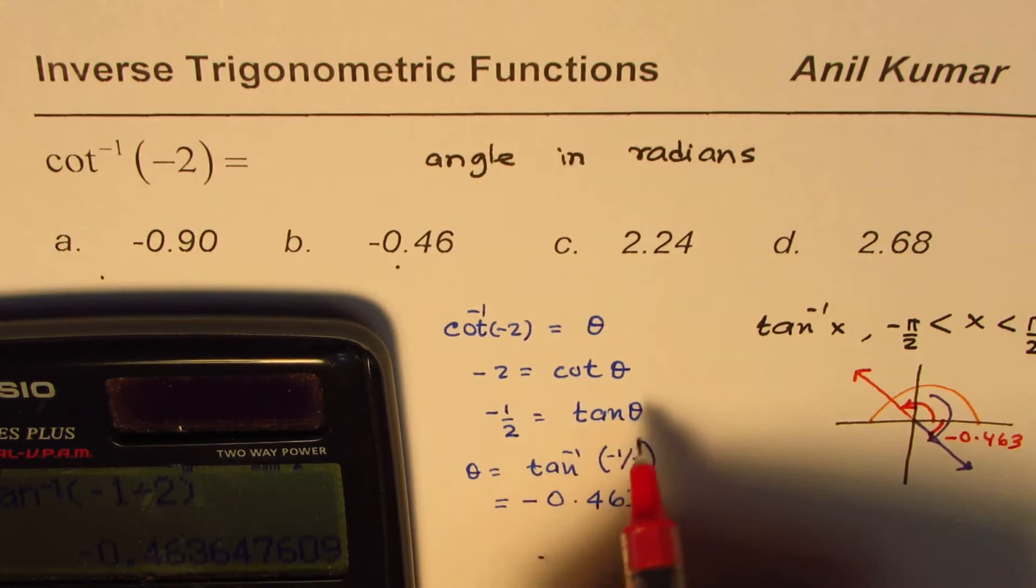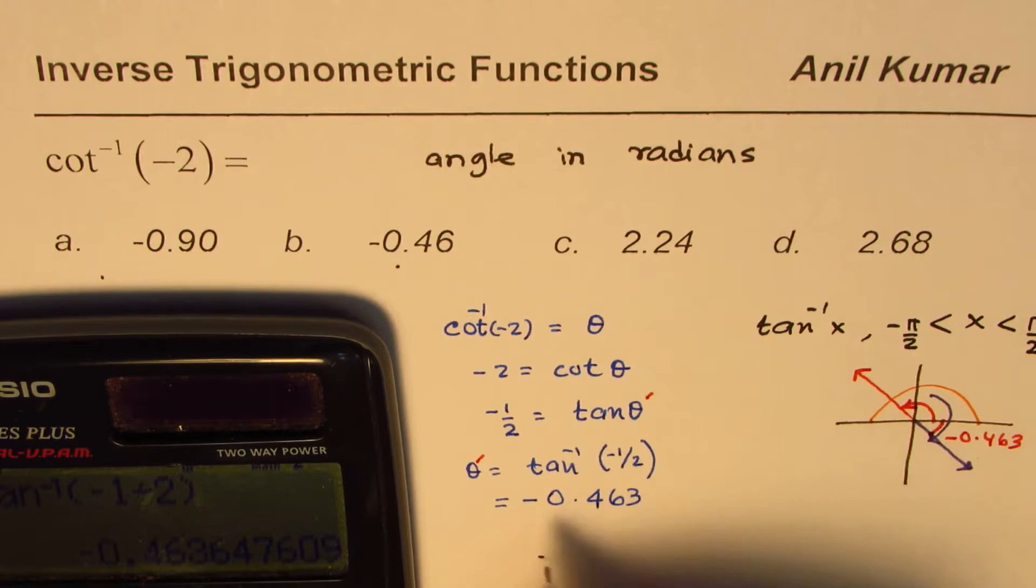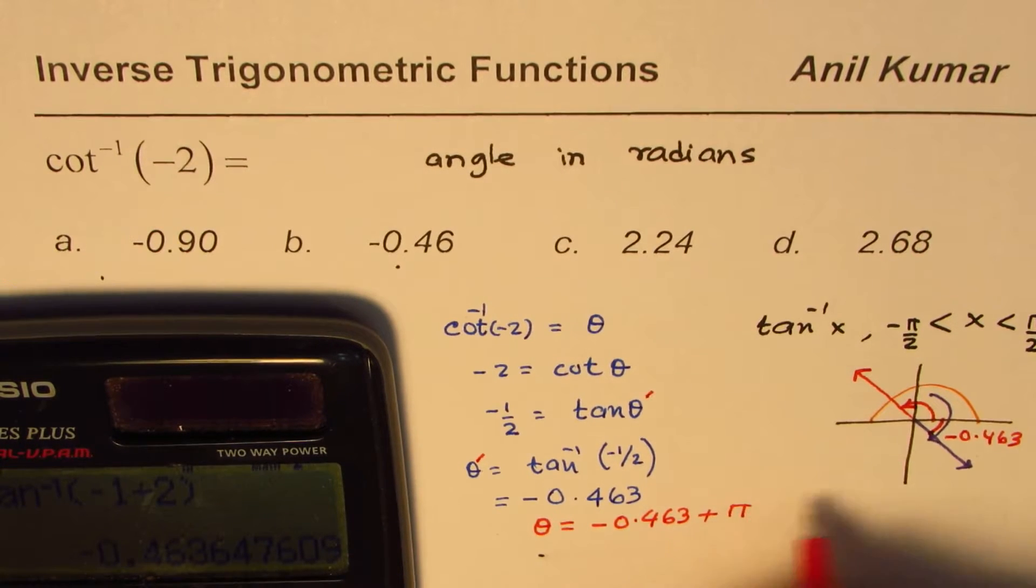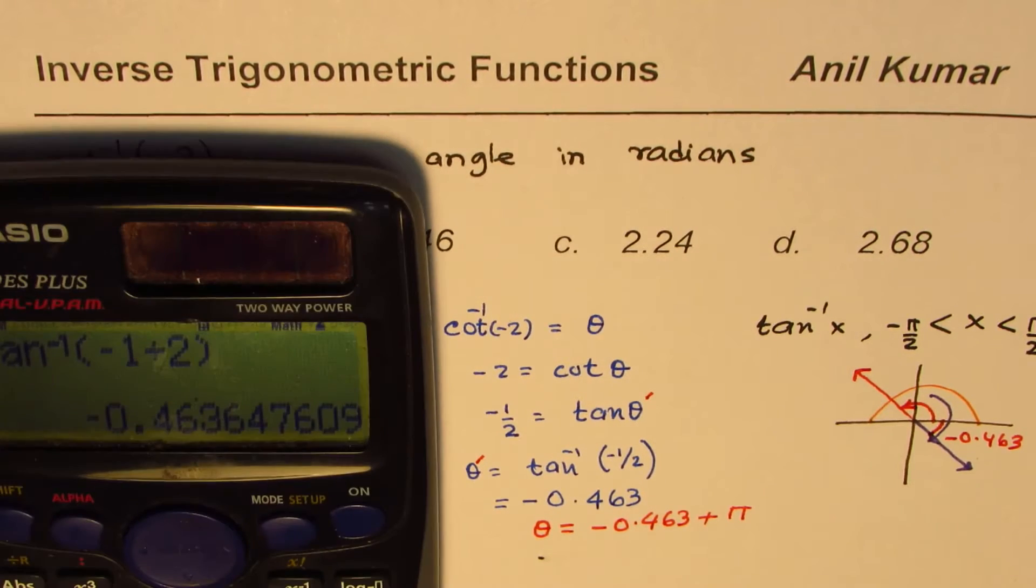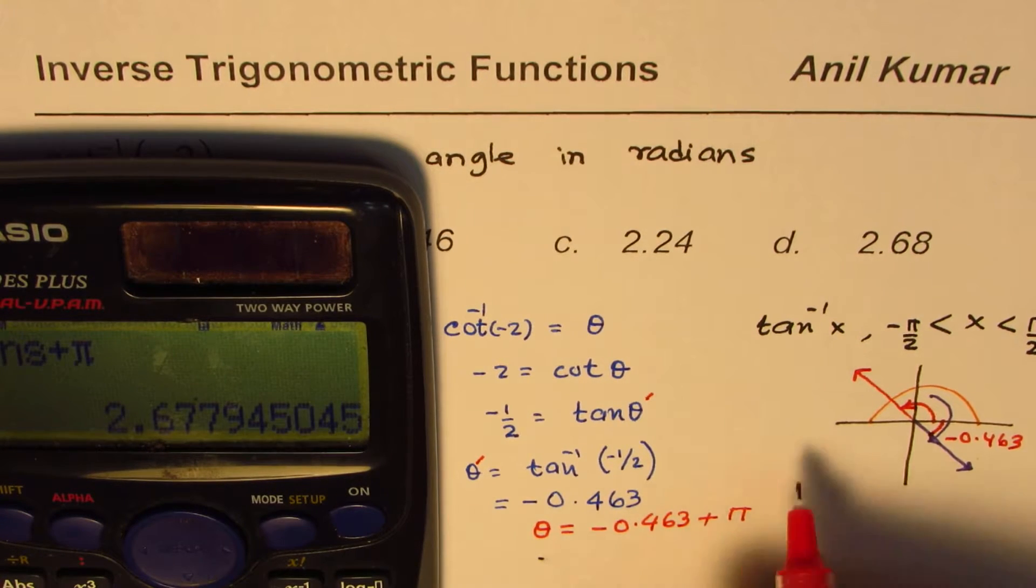Is it okay? You need to add pi to this. So the actual angle theta is actually equal to minus 0.463 plus pi. Then you get the right answer. So if I add pi to this, then I get...